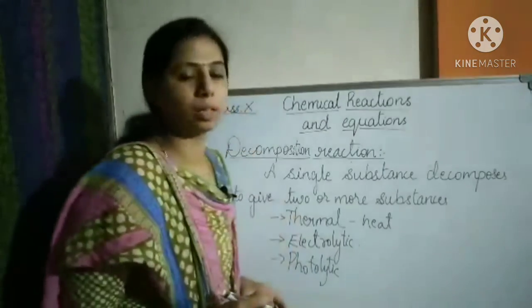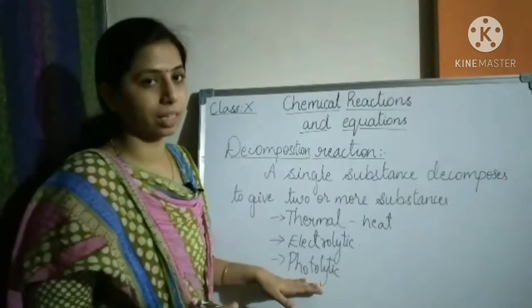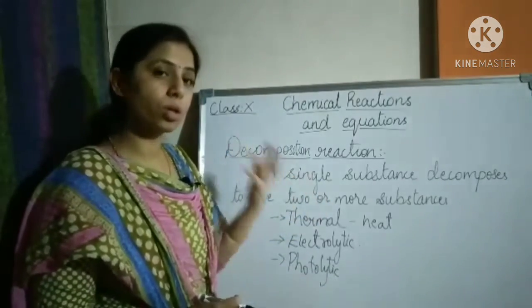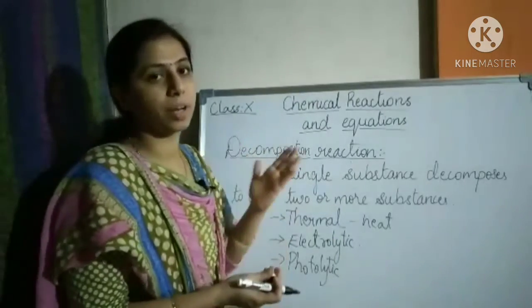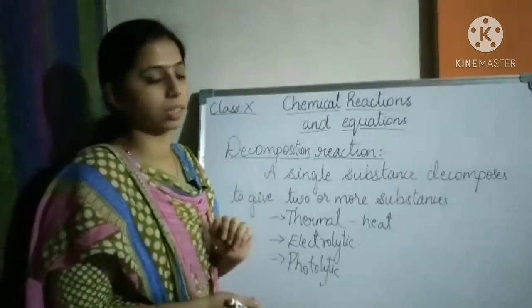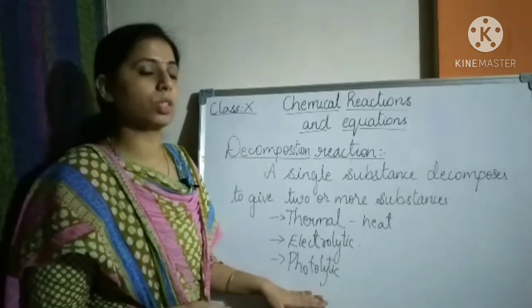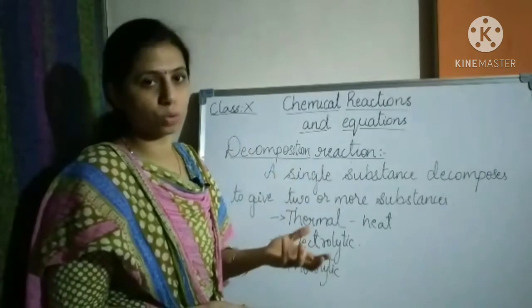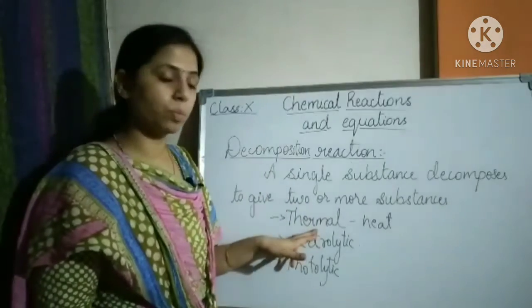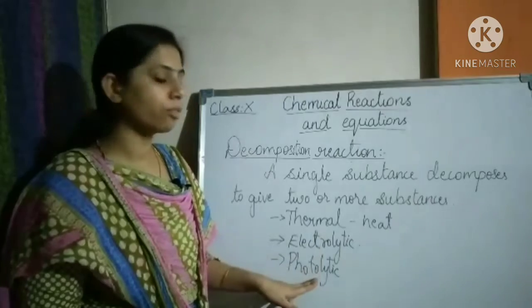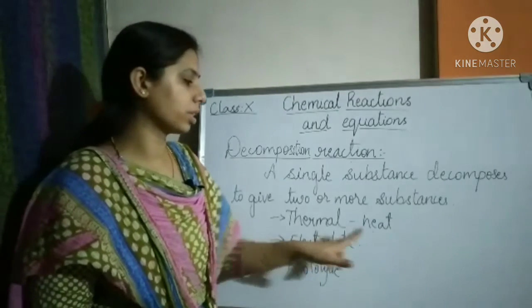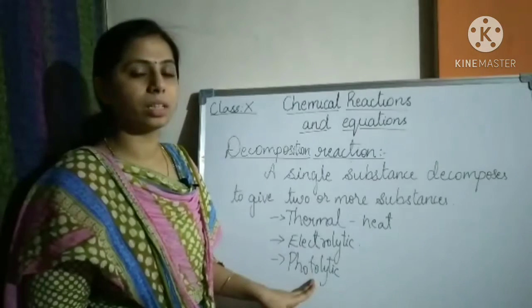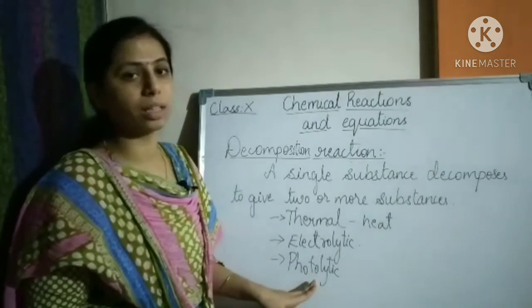The third type is photolytic decomposition — under sunlight, with the help of photons, the decomposition reaction takes place. So decomposition reaction has three types based on the source of energy used: thermal decomposition uses heat, electrolytic decomposition uses electric current, and photolytic decomposition uses photons or sunlight.